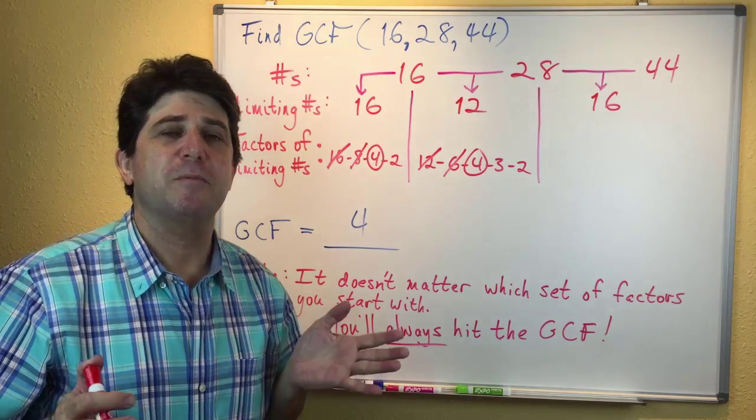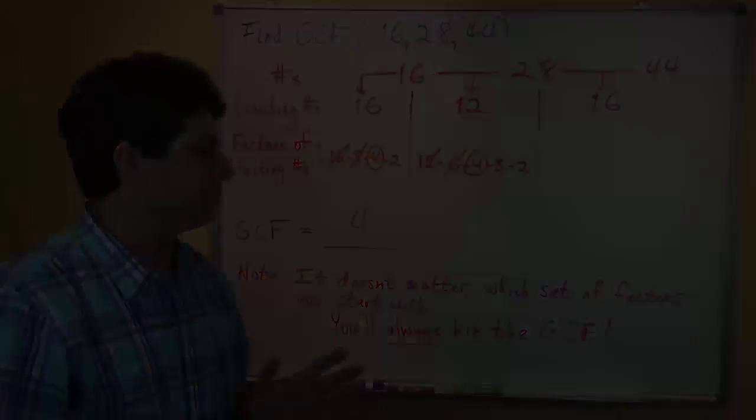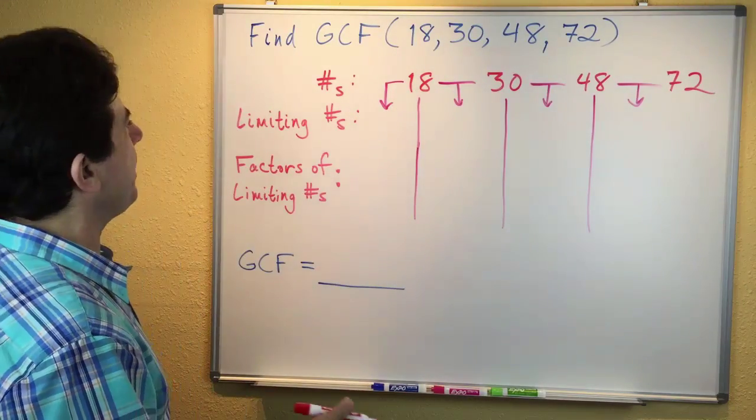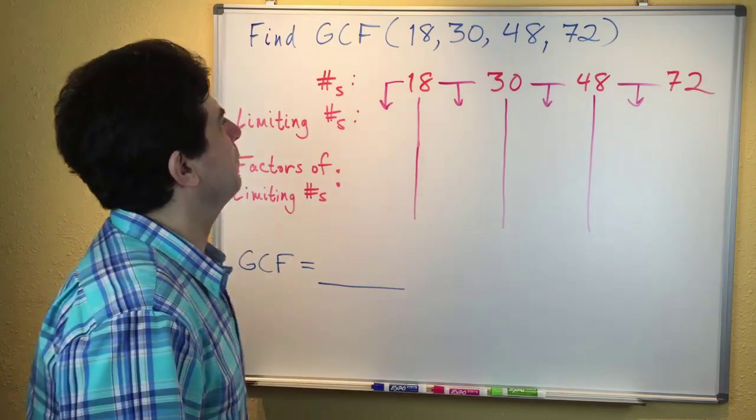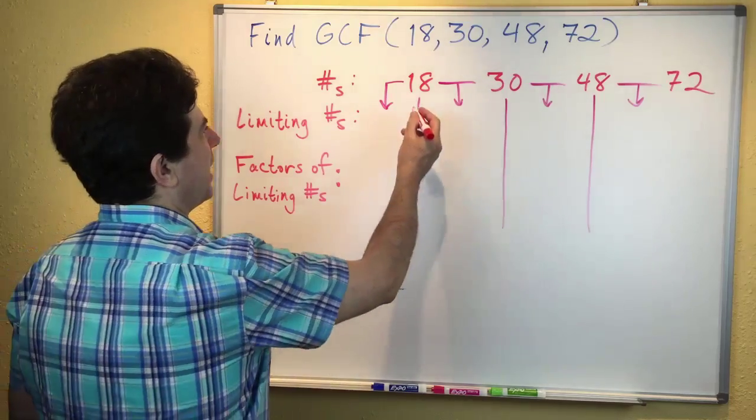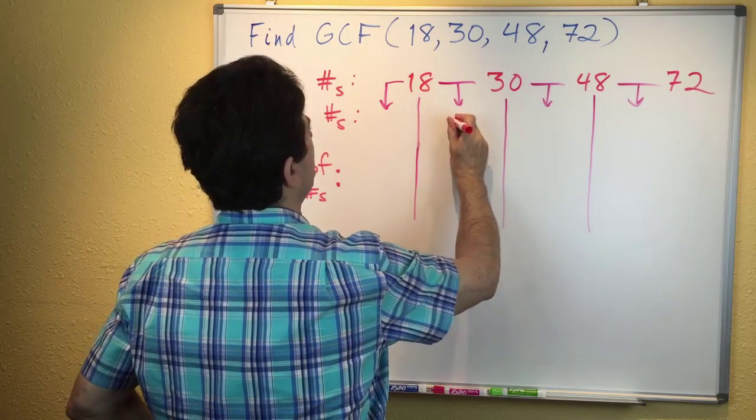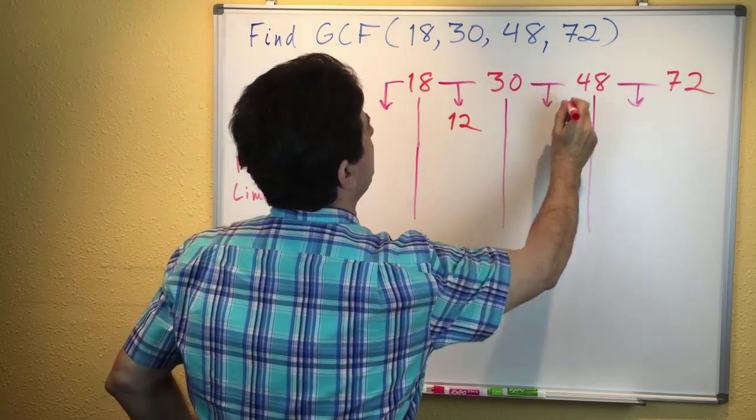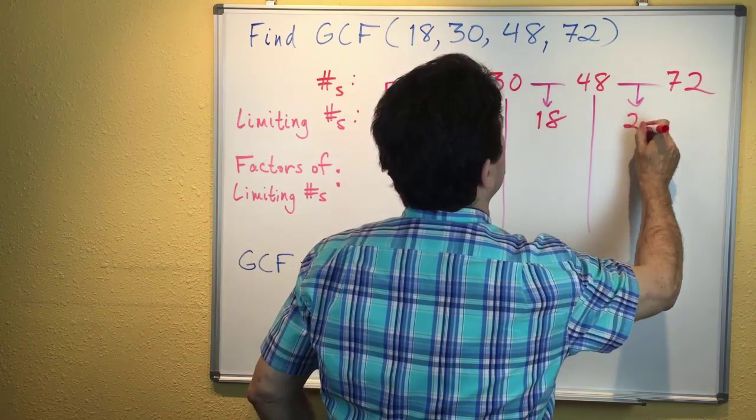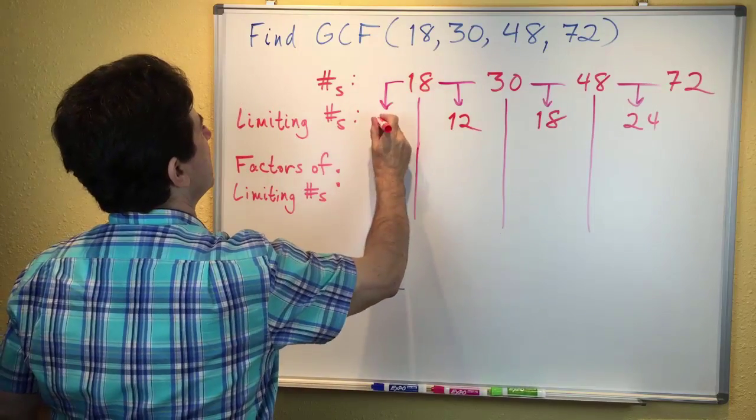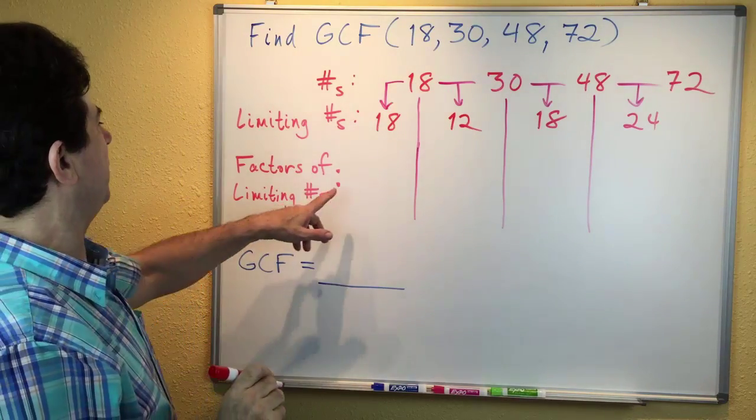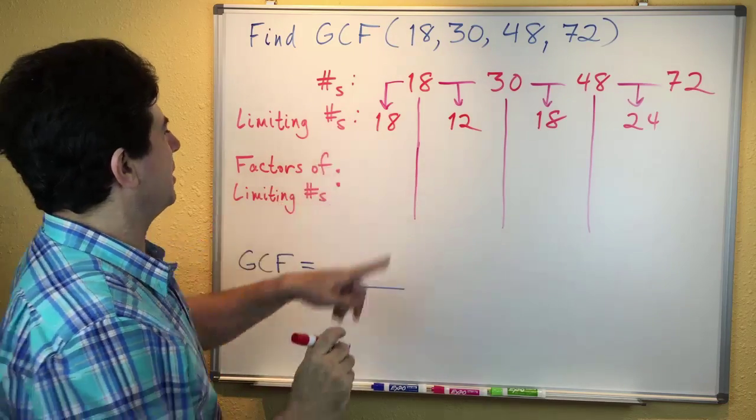Next, I want to show you the same shortcut with 4 numbers. We're finding the GCF for 18, 30, 48, and 72. Here are our numbers in the first row. Our limiting numbers: the gap from 18 to 30 is 12, from 30 to 48 is 18, from 48 to 72 is 24, and we put 18 as our first limiting number because it's the smallest number.